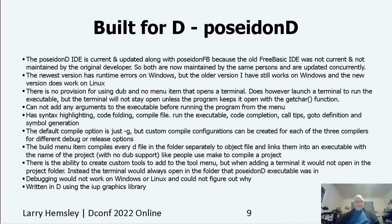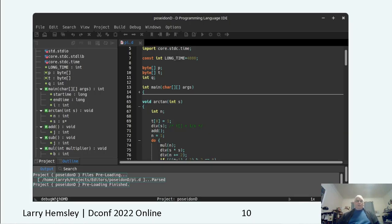There is no provision for using dub and no menu item for a terminal. It has compile file and run executable menu items. There is code completion, call tips, go to definition, and symbol generation. The default debug option is just -g, but you can create a custom compile configuration. The build option compiles every D file in a folder separately and links them into an executable, much like make does, but it doesn't use dub. Debugging would not work on Windows or Linux. Here's a screenshot of Poseidon D — the Linux version — which shows pretty good symbol generation.